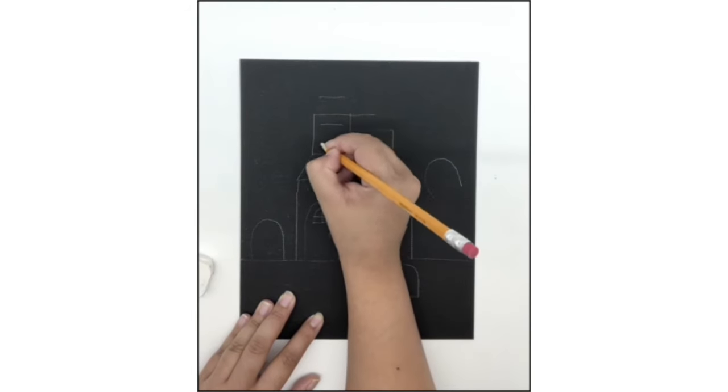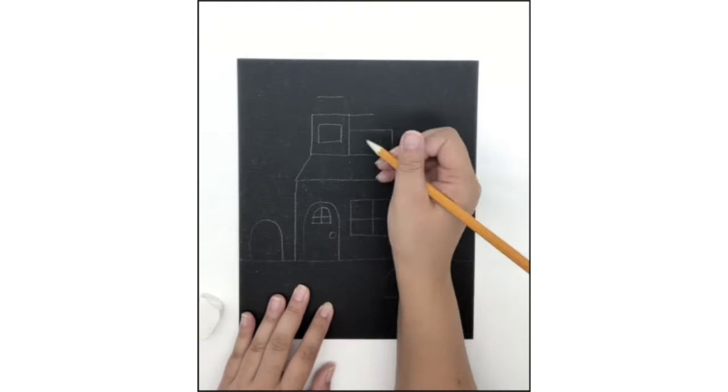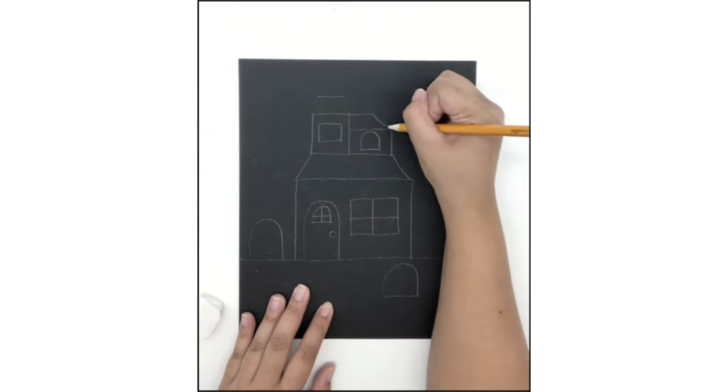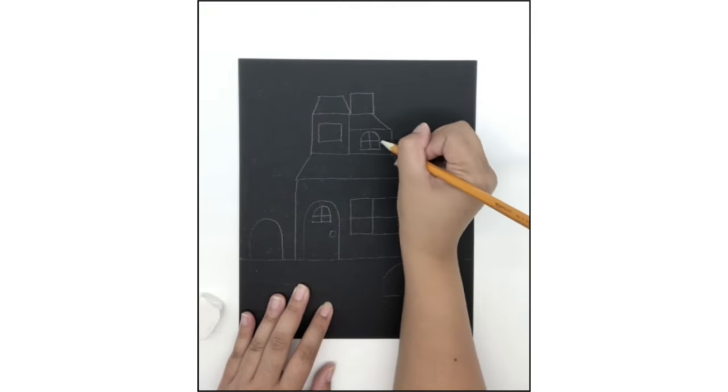Step 5. In our second story, let's add some windows and connect our rooftop lines. Let's add a chimney and another ghost friend coming out.